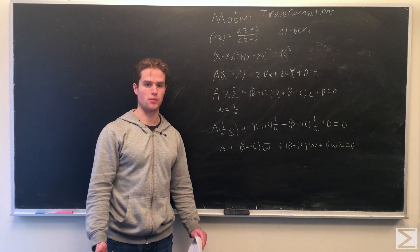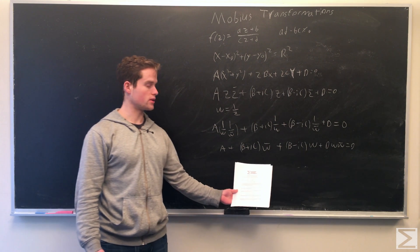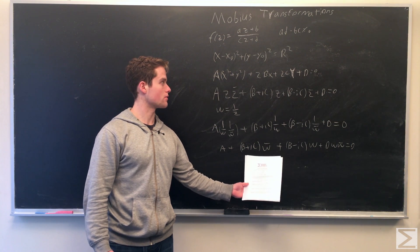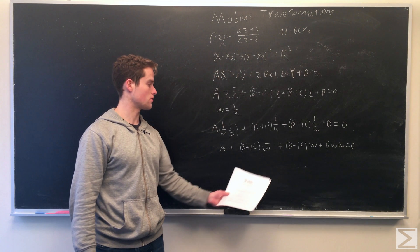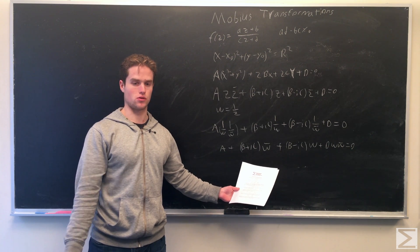Multiplying this whole thing by w times w conjugate, we get an equation in this form, which is actually of the same form that we started with. So this is also the form of a circle or a line.